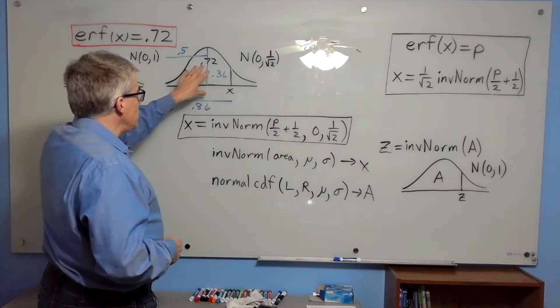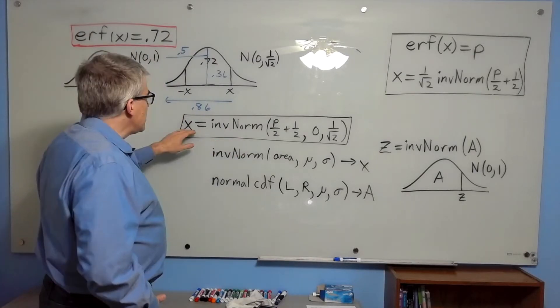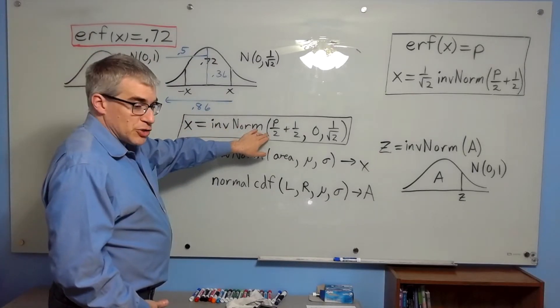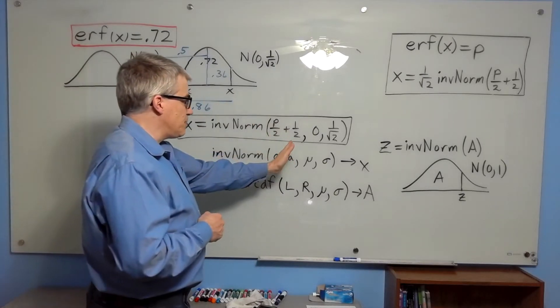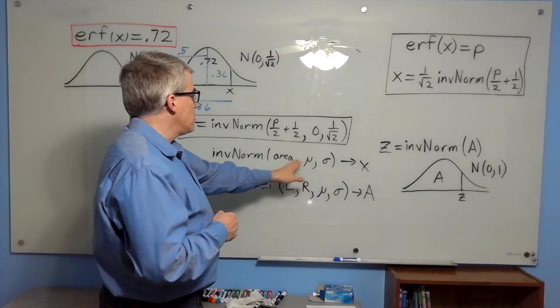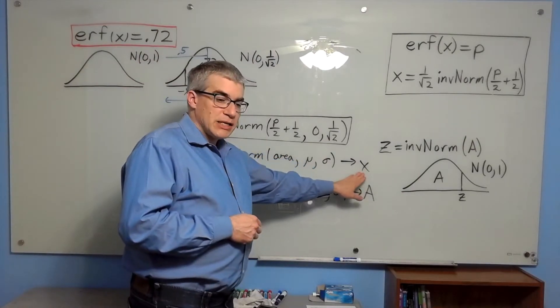Given that, we can use our knowledge of normal distributions. And on the TI-83, there is an inverse norm function where you put in the area from all the way on the left up to your boundary, the mean, the standard deviation, and it will give you the x value at the boundary.